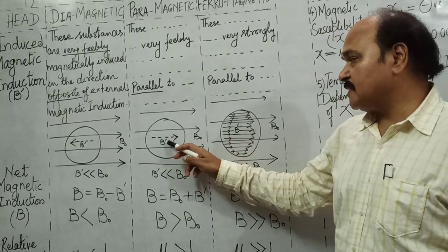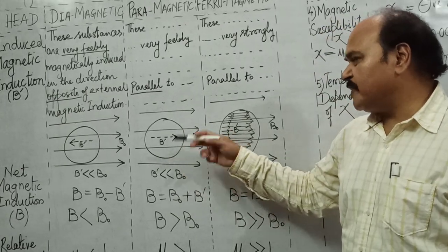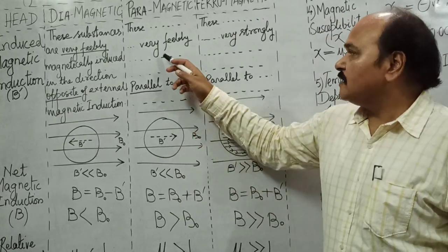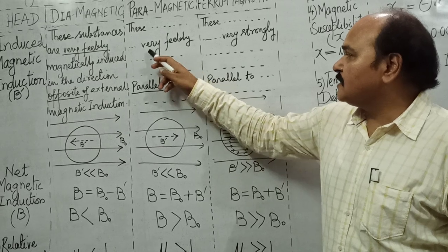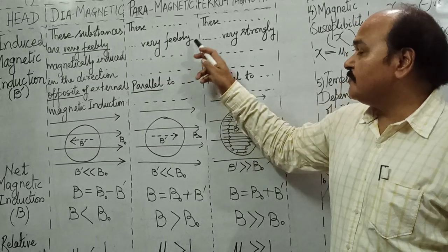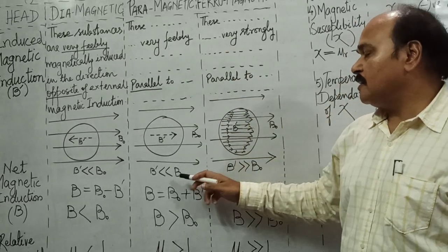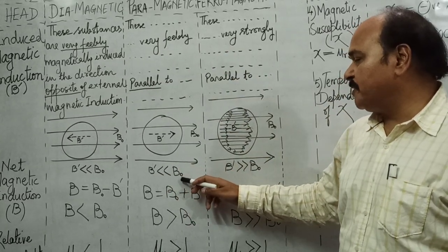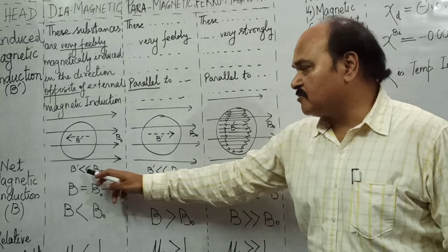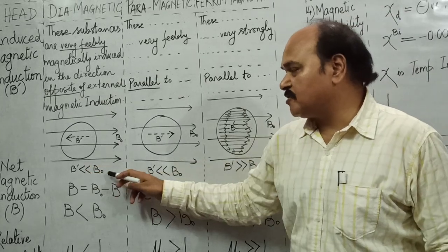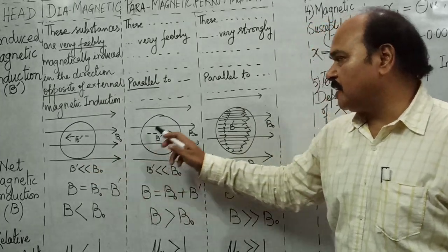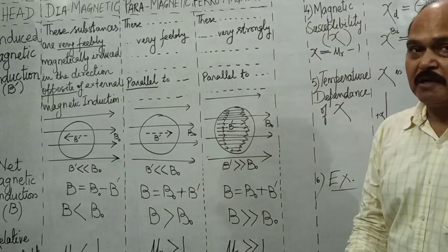B' is as usual very very small, as the magnetic induction is very very feeble. So B' is much smaller than B0. For diamagnetic substances B' is anti-parallel to B0, and for paramagnetic substances B' is parallel to B0, but in both cases B' is much smaller than B0.